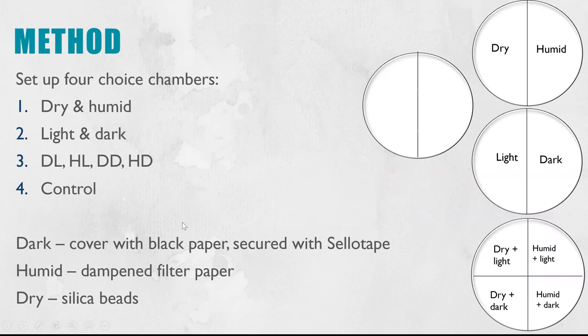Next is the method and if you have time in your lesson ideally you would use four different choice chambers to get the full information. The first one we can see here is empty and that's so that we can see if even if you don't change the conditions do you still get uneven distribution. You should find that you get relatively equal distribution to show that it is due to the independent variables and nothing else.